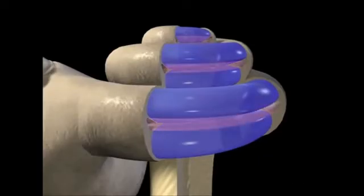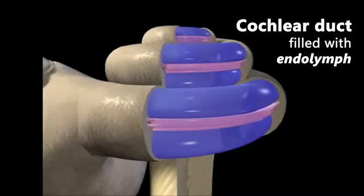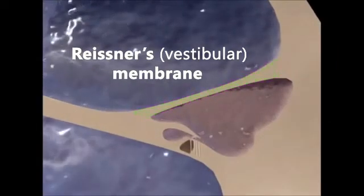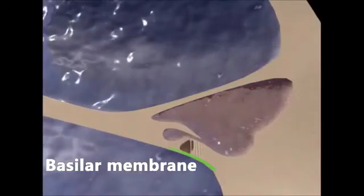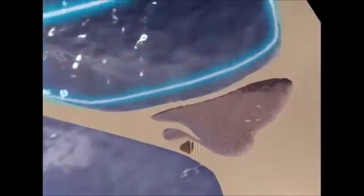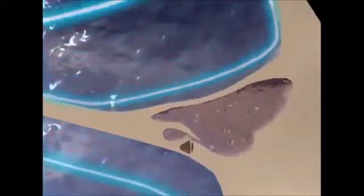A third structure, called the cochlear duct, is situated between the scala vestibuli and the scala tympani. The cochlear duct is filled with a fluid called endolymph, and when viewed in cross-section, the membranes separating the two fluid-filled systems are visible. They are Reissner's membrane and the basilar membrane. The membranes are flexible and move in response to the vibrations traveling up the scala vestibuli, then send vibrations back down to the scala tympani.